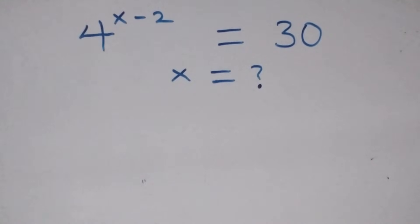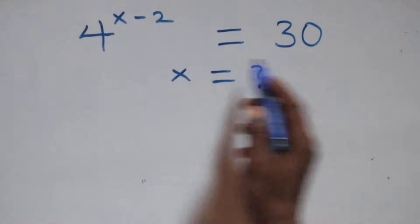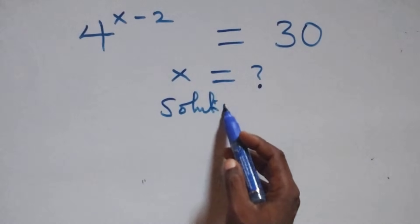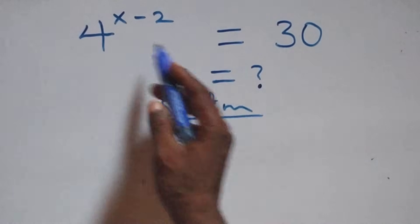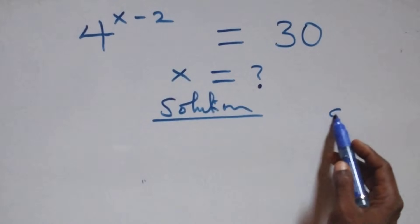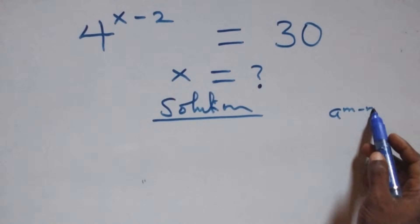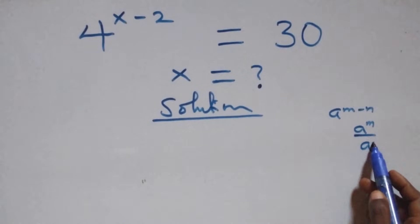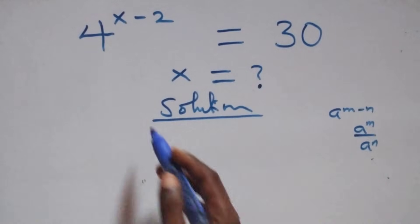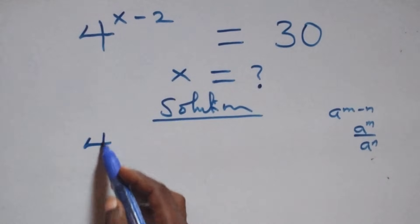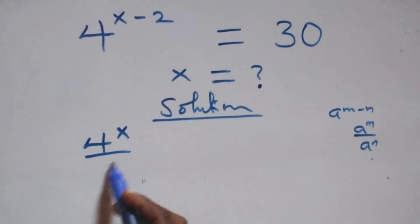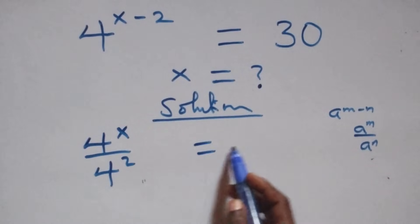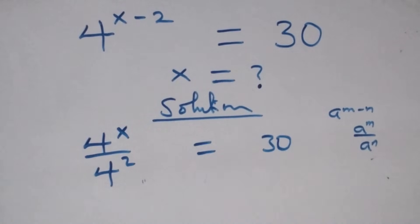Hello, you're welcome. How to solve this nice exponential equation. From what we have here, we use the rule: a raised to power n minus m is the same thing as a raised to power n over a raised to power m. Here we have 4 raised to power x over 4 squared equals 30.